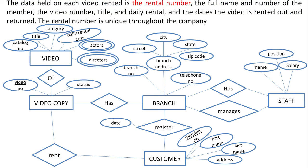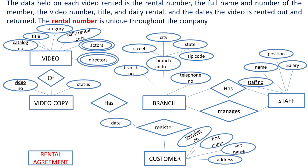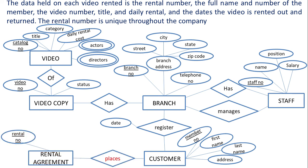The data held on each video rented is the rental number, the full name and number of the member, the video number, title, and daily rental cost, and the date the video is rented out and returned. The rental number is unique throughout the company. Since rental number is unique, we can make the relationship 'rent' a separate entity, which we will call 'rental agreement.' Rental number is the primary key for this entity.